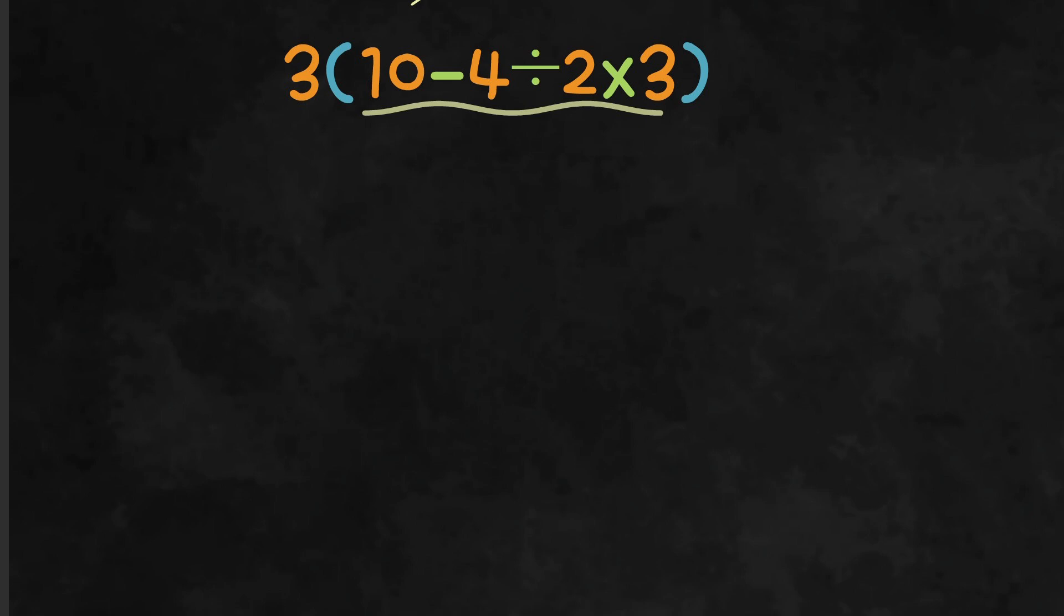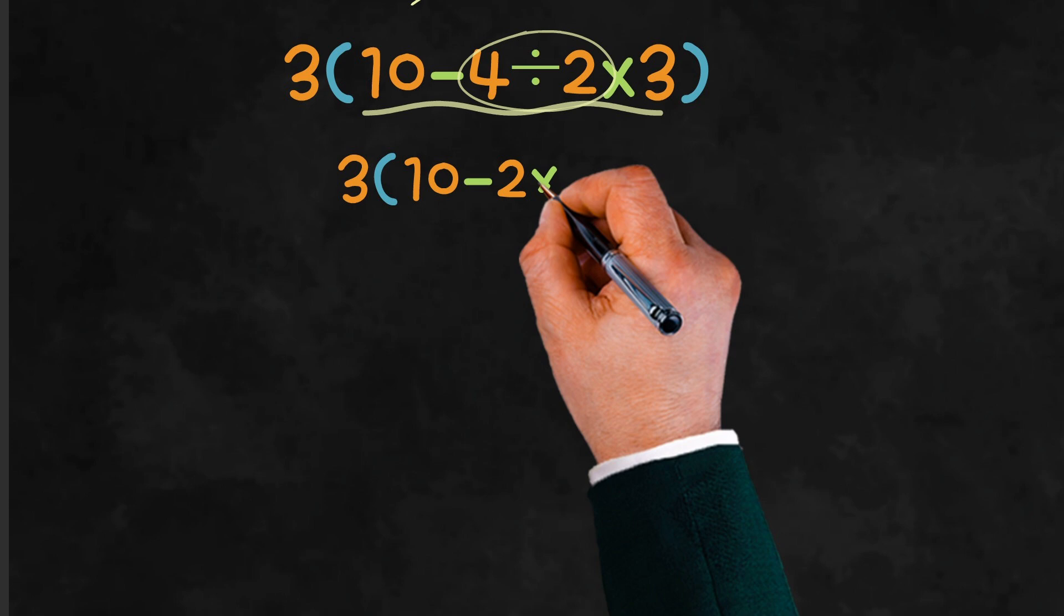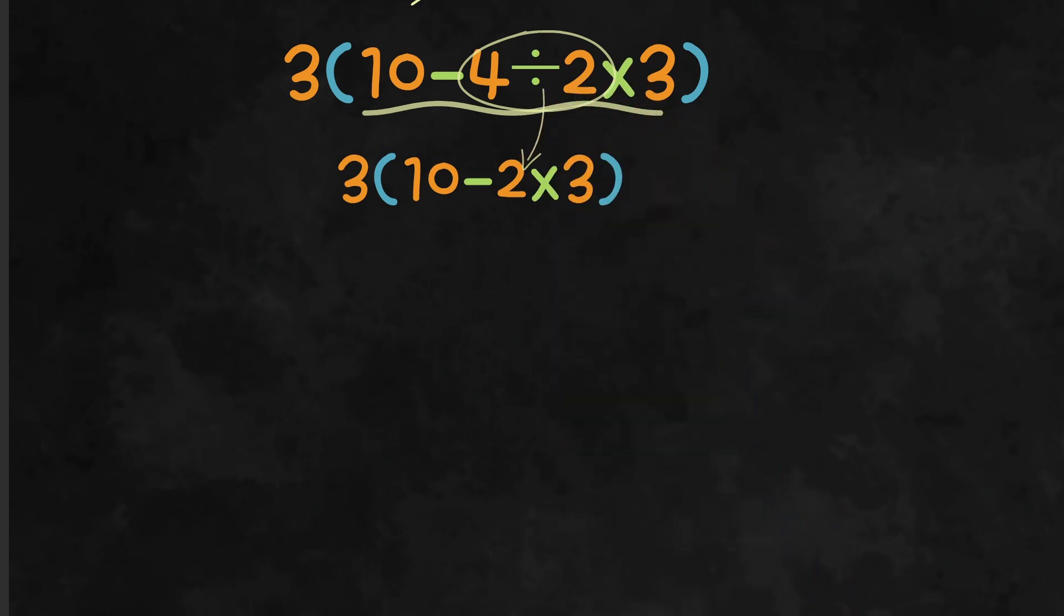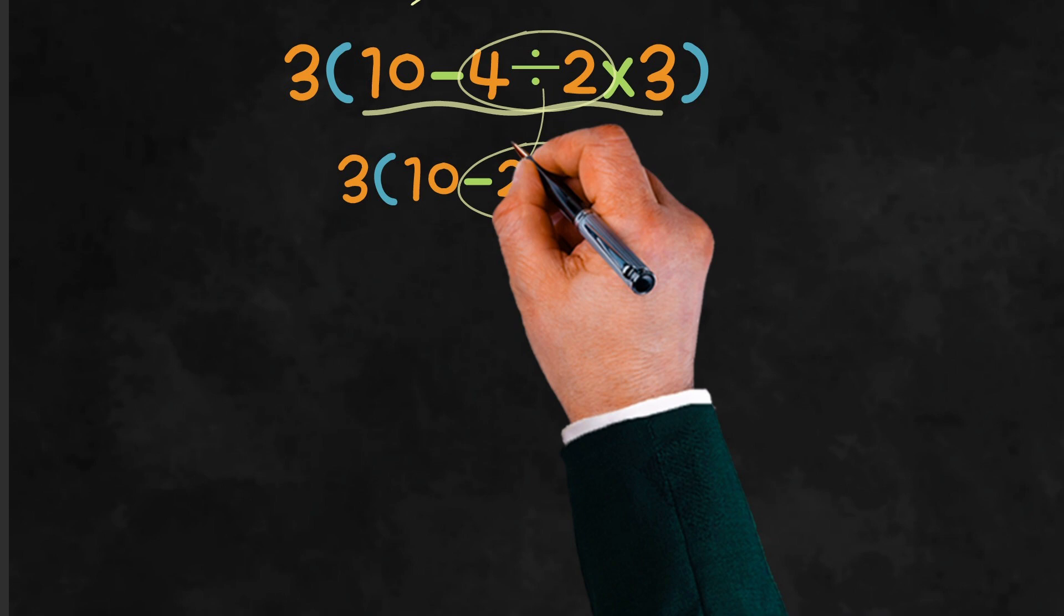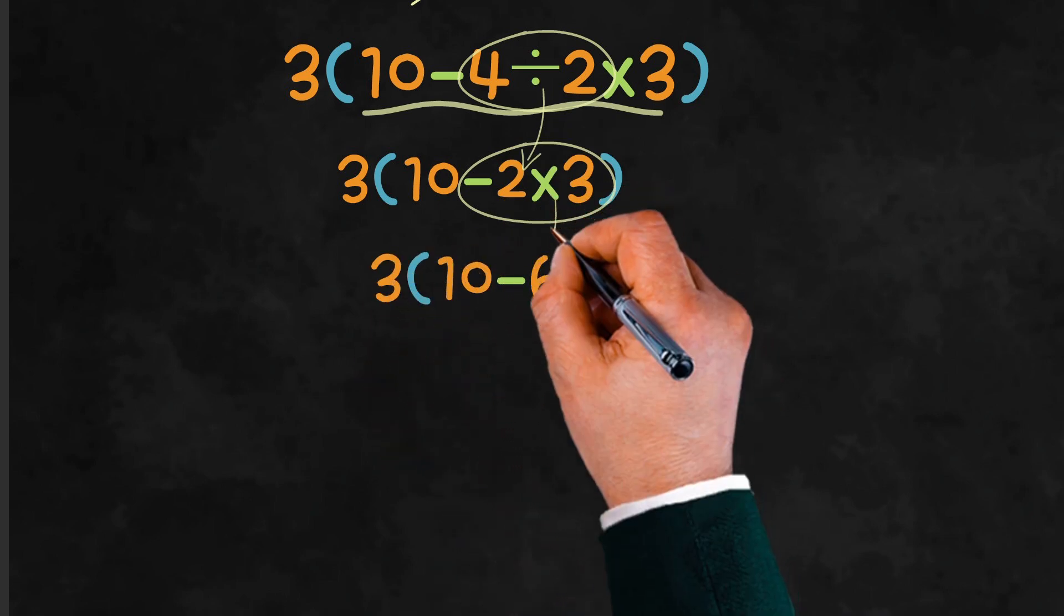Inside the parentheses, we start by handling division and multiplication from left to right. 4 divided by 2 gives us 2. Next, we multiply that by 3. 2 times 3 equals 6.